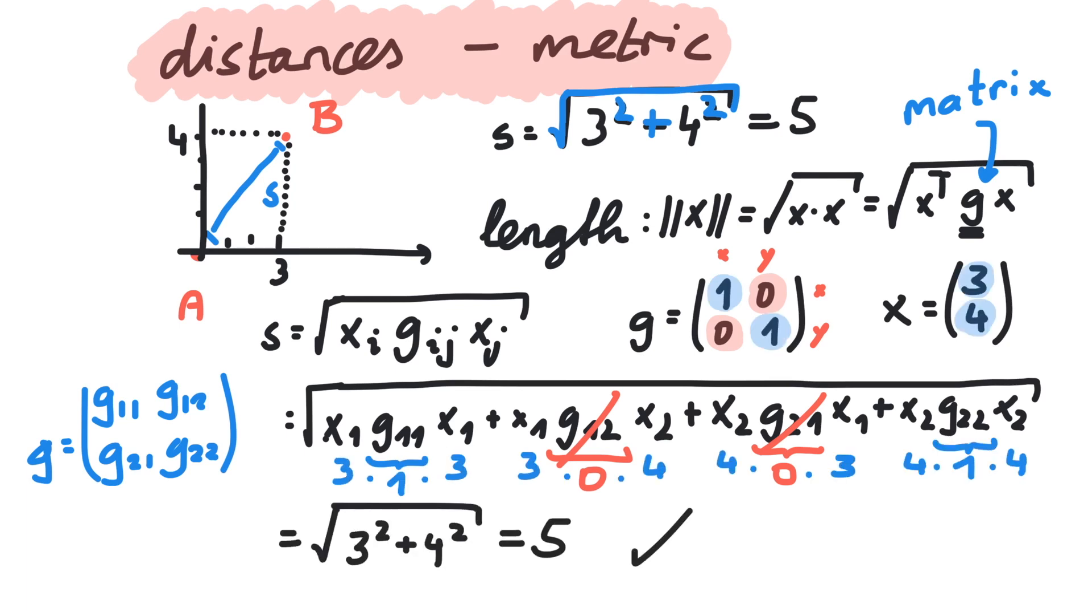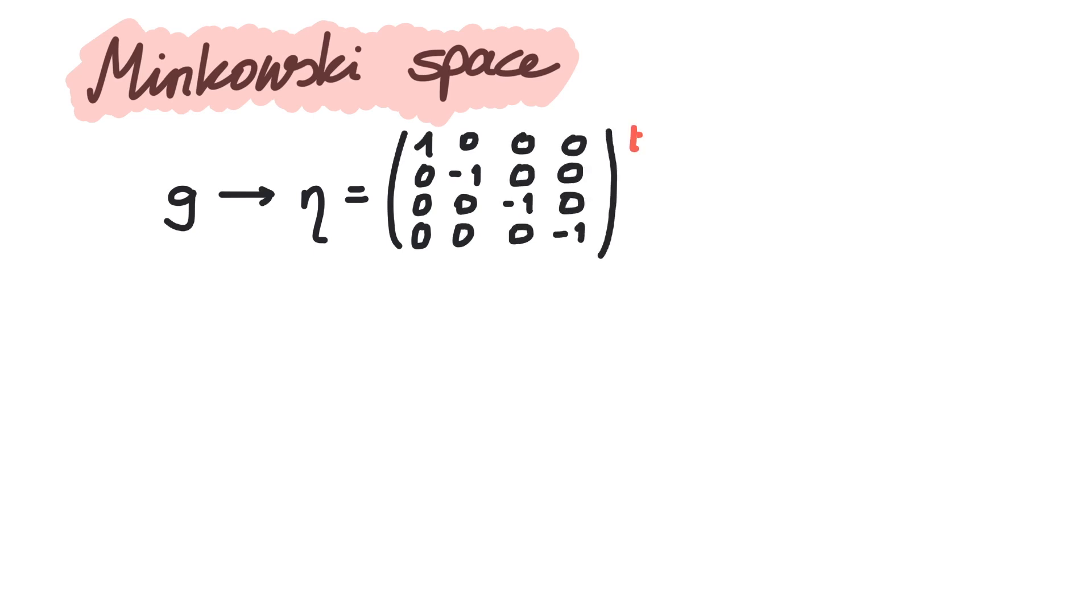Now let's switch to Minkowski space. Here we have a new metric, denoted by the Greek letter eta. It looks like this, where the first row and column is connected to time and the others to space. In order to remember that we now use this metric, we'll also use Greek letters for our indices later on.